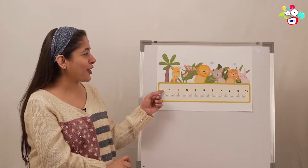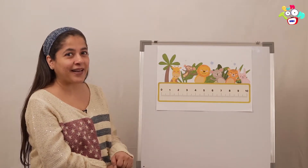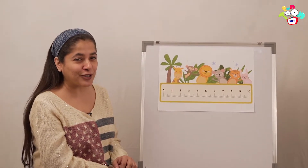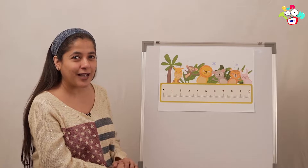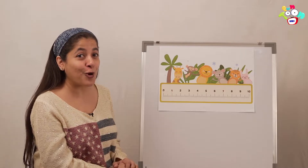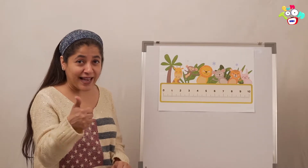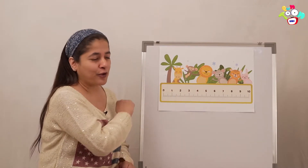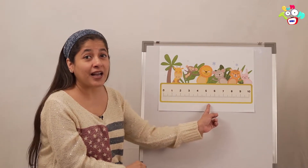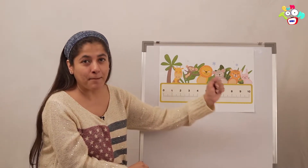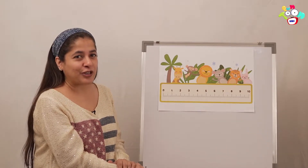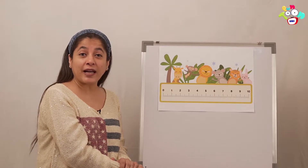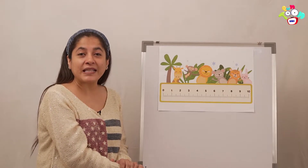I'm sure you've all seen this by now, and you'll know what this is called. All my children, tell me what is this called? I showed it to all of you last time. Yes, you're right. This is the number line. What is it called? The number line. And do you know what we are going to learn today? We are going to learn missing numbers.